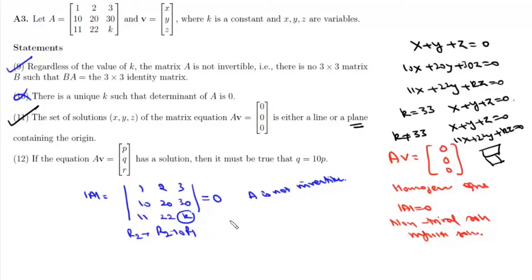Statement 12 says if the matrix equation Av = [p, q, r] has a solution, then q must equal 10p.